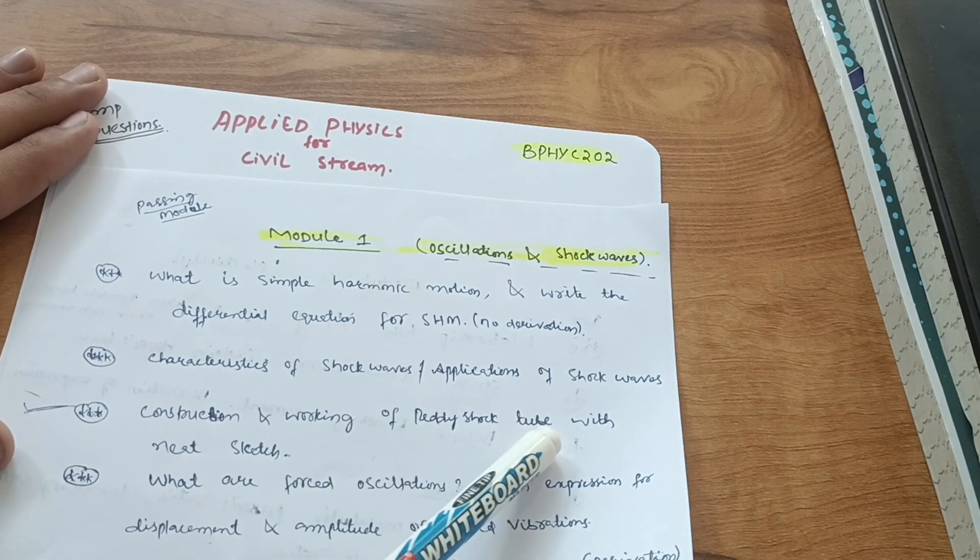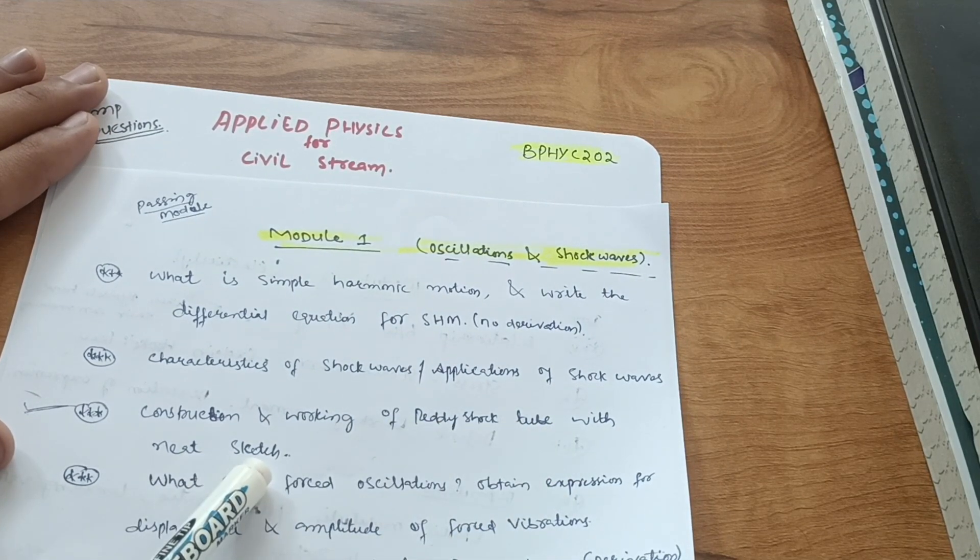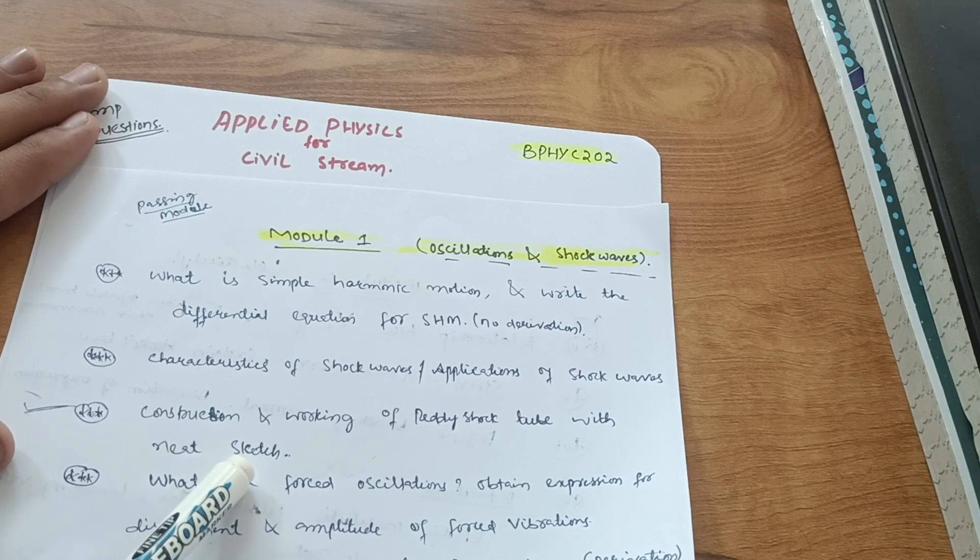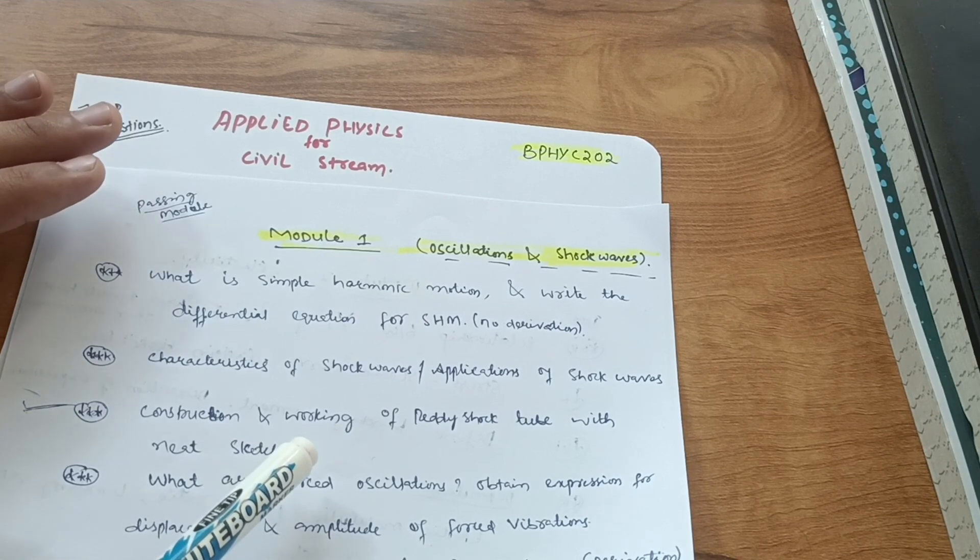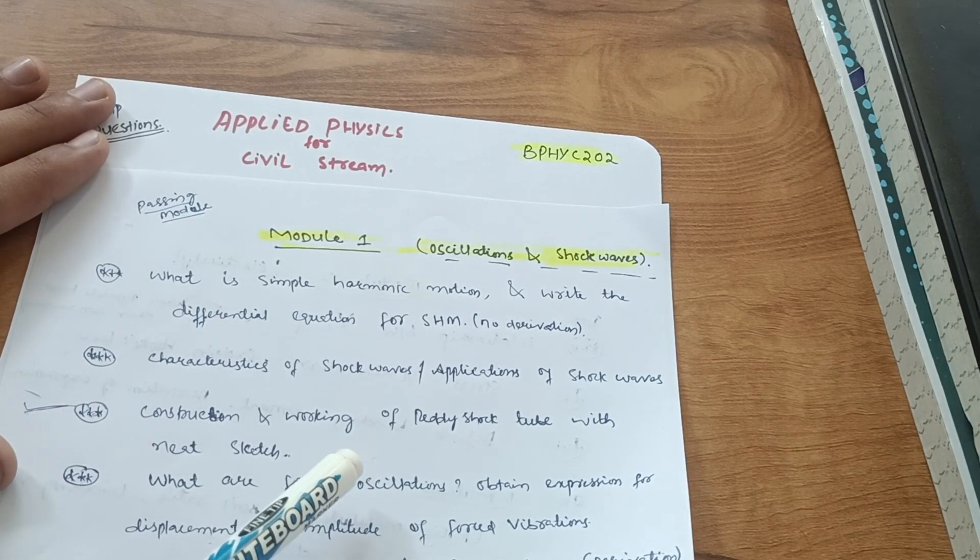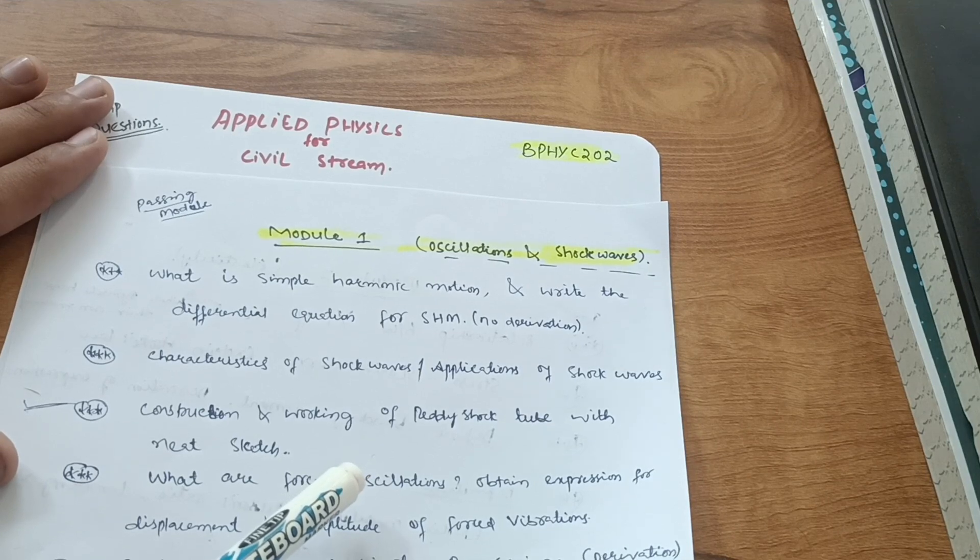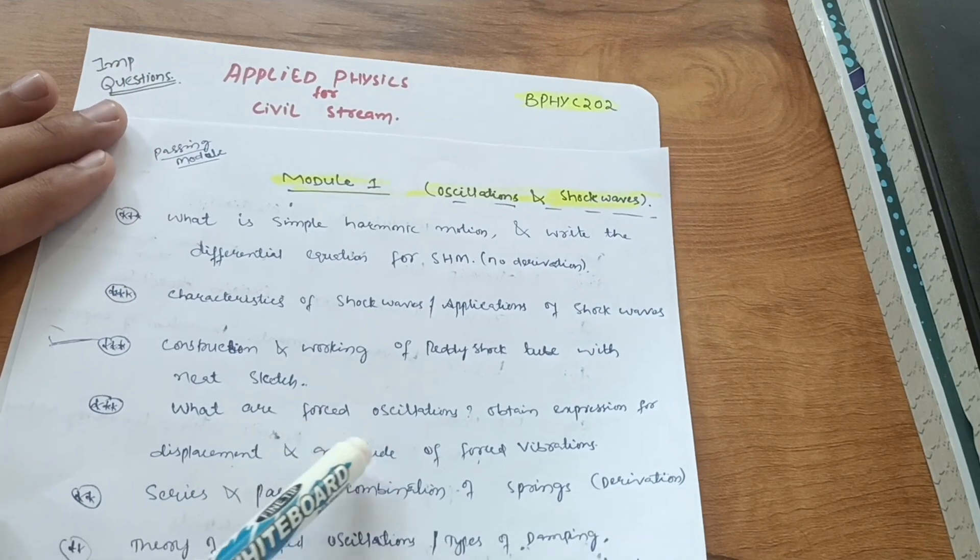Construction and working of ready shock tube with neat sketch is a super important question. Just write down the diagram, construction, and try to write the working in your own convenient language so you can write it in your own words in the examination. Then what are forced oscillations.